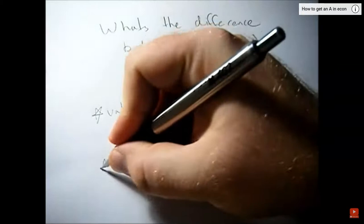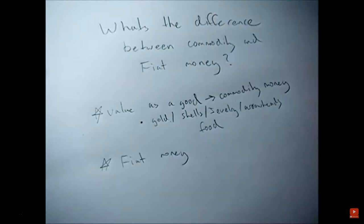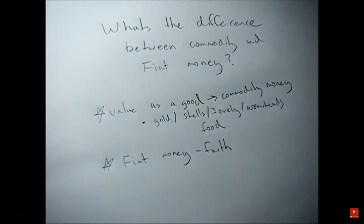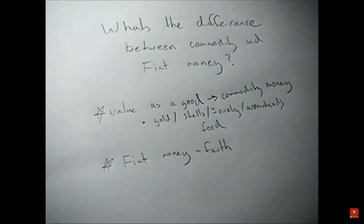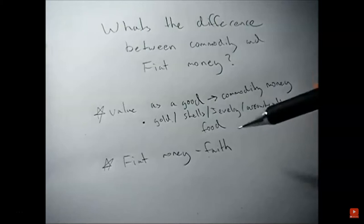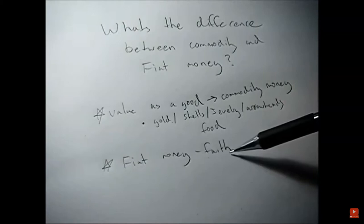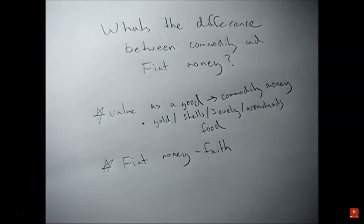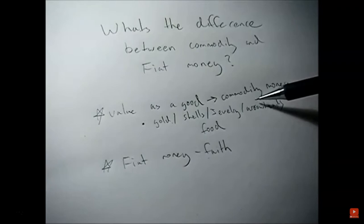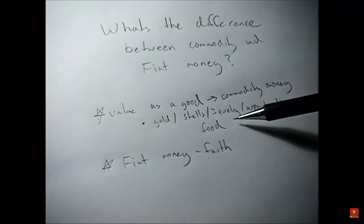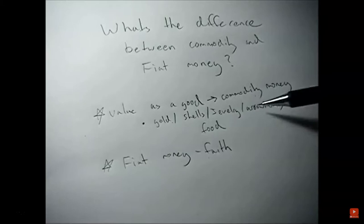Fiat money is completely based on faith. The government declares it money — any dollar bill states it must be accepted to satisfy all debts. The government requires people to accept it to pay off debts. We have faith in the government and therefore faith in the money. If the U.S. government collapsed tomorrow, the dollar would be worthless — that piece of paper would have no value. But commodity money like food, jewelry, or gold would still retain its commodity value, which raises the historical debate over fiat money backed by commodities and the gold standard.